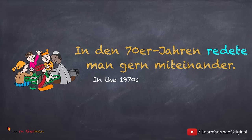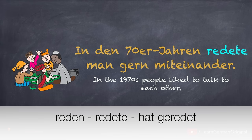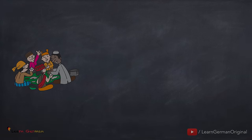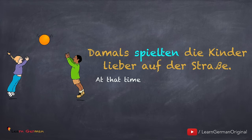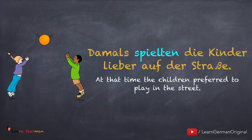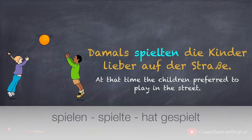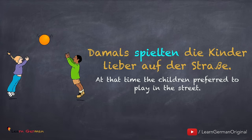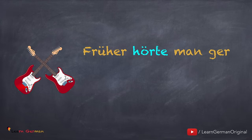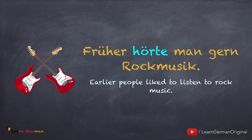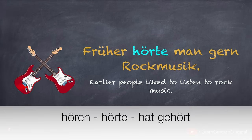In den 70er Jahren redete man gern miteinander. Reden, redete, hat geredet. Damals spielten die Kinder lieber auf der Straße. Spielen, spielte, hat gespielt. Früher hörte man gern Rockmusik. Hören, hörte, hat gehört.